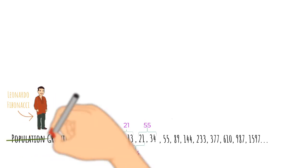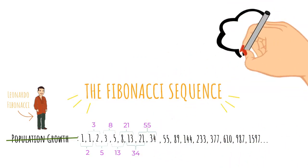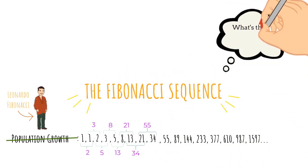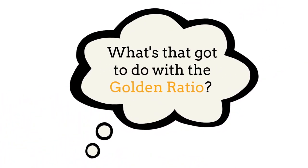You might have already guessed that we do not call this population growth. We call it the Fibonacci sequence. Surprise, surprise. I know what some of you are thinking. What's that got to do with the golden ratio? Well, a lot apparently.